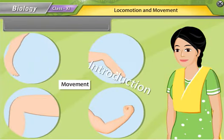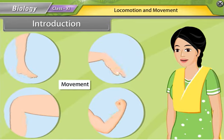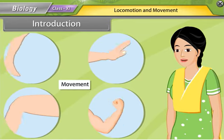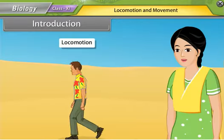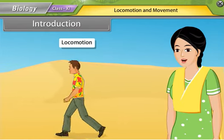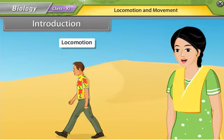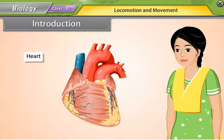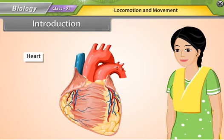Hey kids, in this lesson you will learn about locomotion and movement in the human body. Movement is a feature of all living organisms. Animals move from place to place. When an organism moves from one place to another as a whole, it is known as locomotion. When only a part of the body moves, it is called movement. Movement also takes place inside the body — for example, our heart beats all the time.